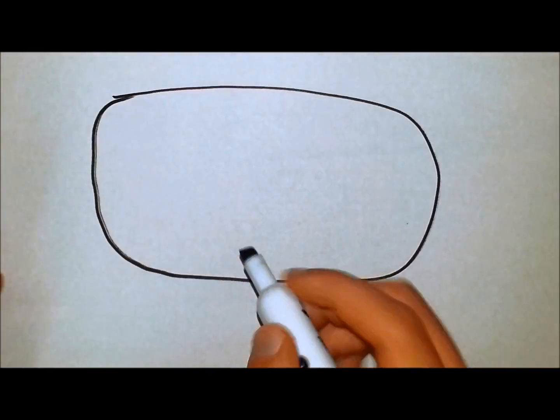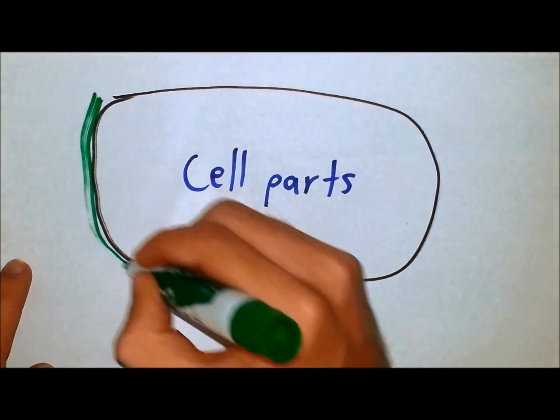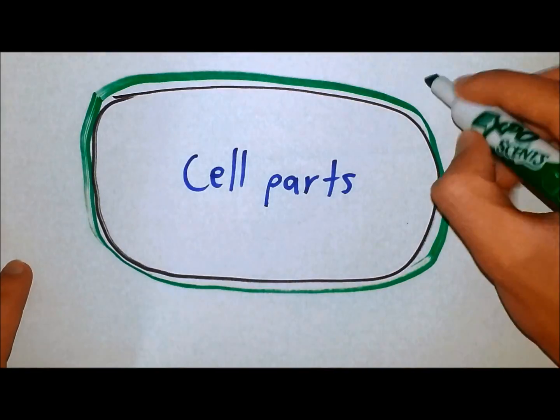The plant cell wall is a tough, flexible, and sometimes rigid layer that surrounds the cell membrane and its cell parts. It will be represented by the green line here.